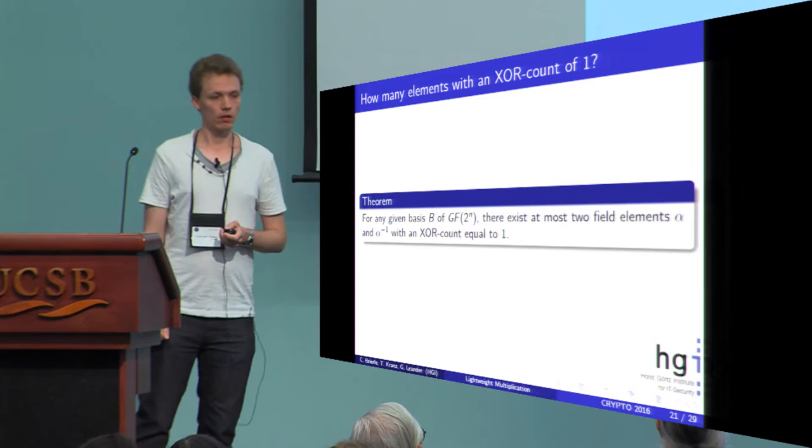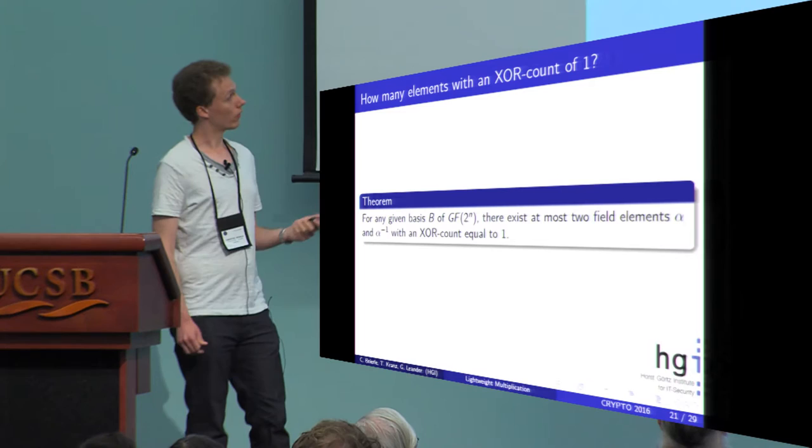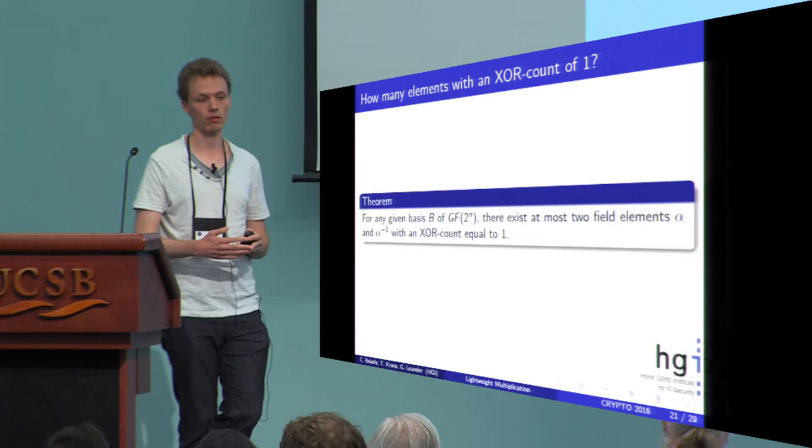Another thing we investigated is if there are elements with an XOR count of one, how many elements are there in a field for a fixed basis. You can see that there are at most two elements with an XOR count of one. And the other element is necessarily the multiplicative inverse of the first element for a fixed basis.